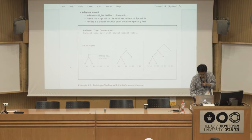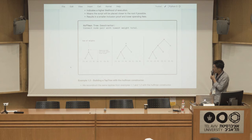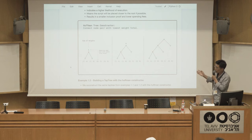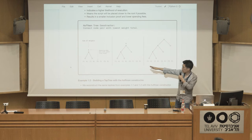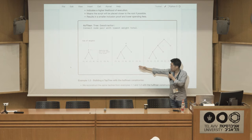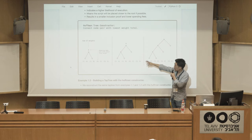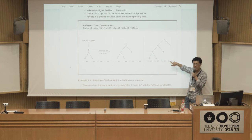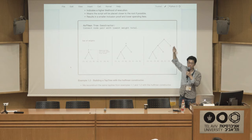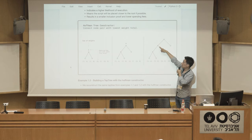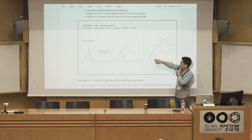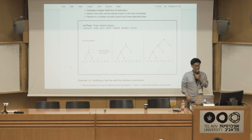There's another way for a more complicated or larger tap tree: a Huffman constructor, which is a greedy algorithm where you have a list of scripts — say A, B, C, D — and you indicate a probability weight. Using the algorithm, the tree is constructed so that if the probability weight is high, that script is more likely to be closer to the root, meaning its inclusion proof is shorter and cheaper to spend. If a script is deeper, the inclusion proof includes more hashes and is therefore more expensive.